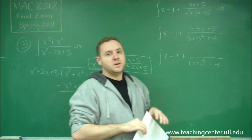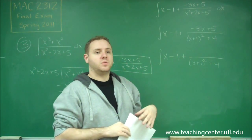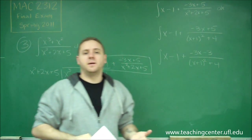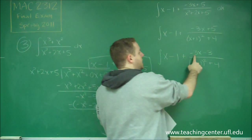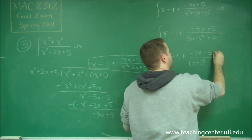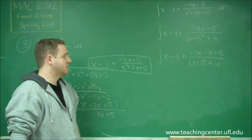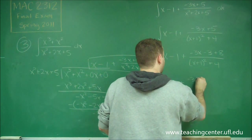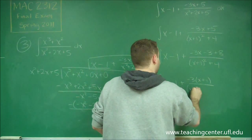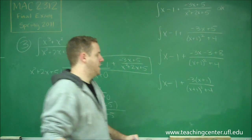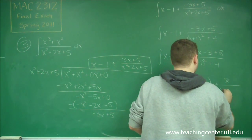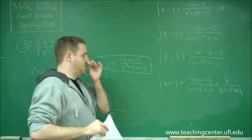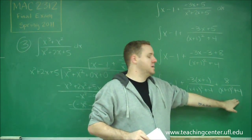We need a factor of x plus 1 in the numerator, and we can do that by splitting up this number. We have negative 3x — in order to get x plus 1, we need negative 3x minus 3, because factoring out the negative 3 gives x plus 1. So if we want negative 3x minus 3, to get back to plus 5 we need plus 8, since minus 3 plus 8 is 5. Now we split into negative 3 times x plus 1 over the denominator, and 8 over the denominator. This is going to be a natural log and an arctangent function.